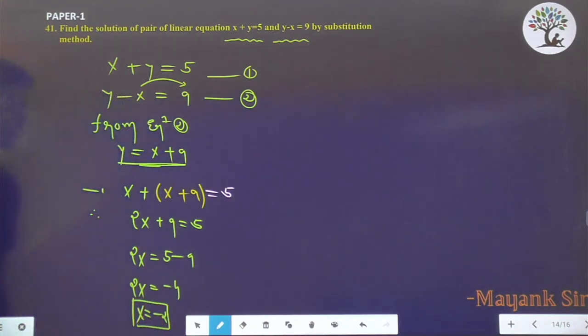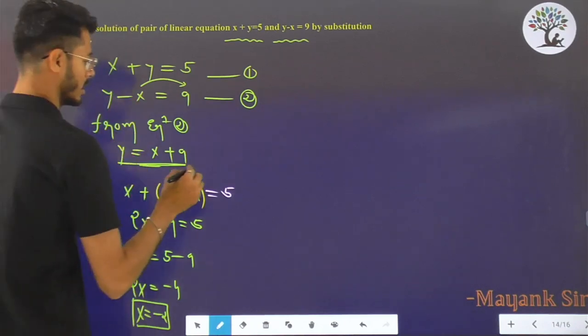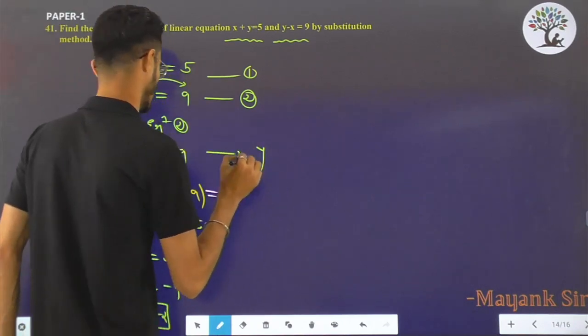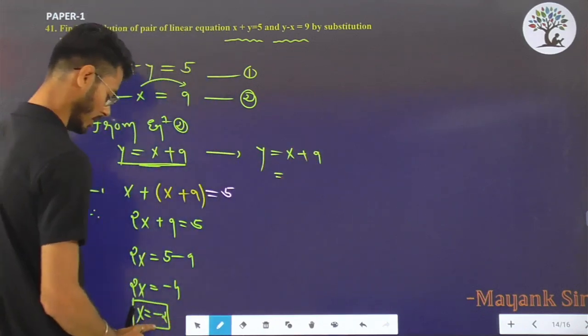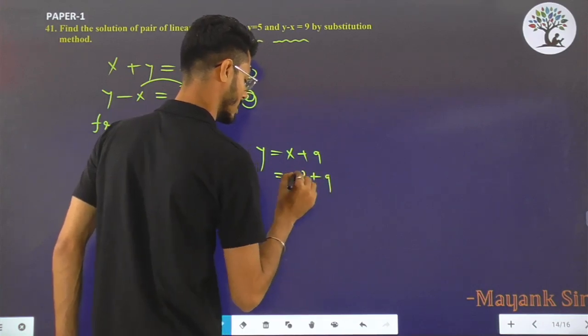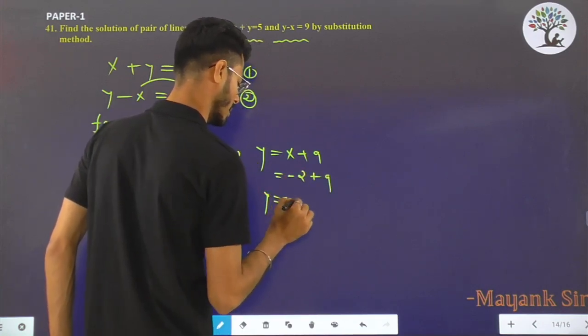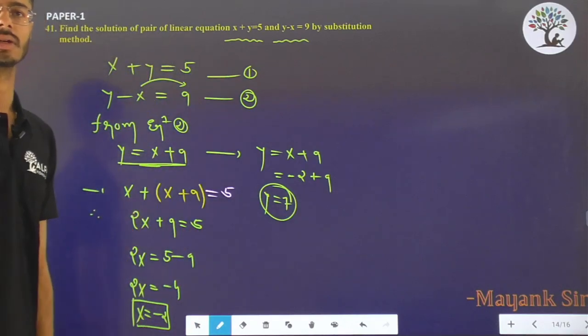So from this value of x we can find the value of y from this equation. So y equals x + 9, putting the value of x that is -2 + 9, so value of y is simply 7 and value of x is -2.